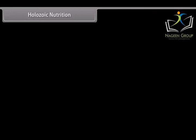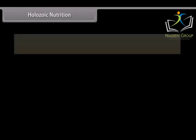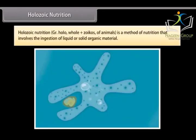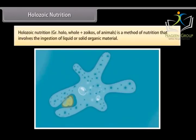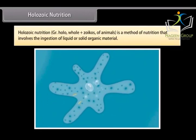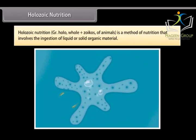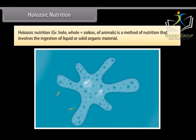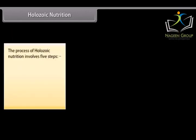Holozoic Nutrition: 'Holo' means whole and 'zoicos' means animals. It is a method of nutrition that involves the ingestion of liquid or solid organic material. The process of holozoic nutrition involves five steps.